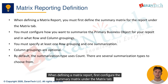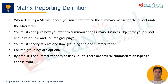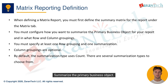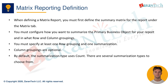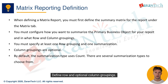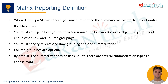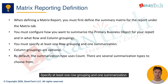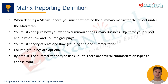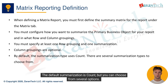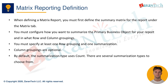When defining a matrix report, first configure the summary matrix under the matrix tab. Summarize the primary business object and define row and optional column groupings. Specify at least one row grouping and one summarization — the default summarization is count, but you can choose from several options.